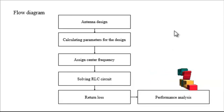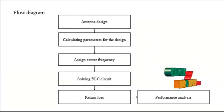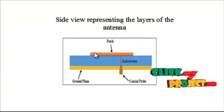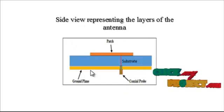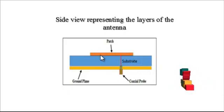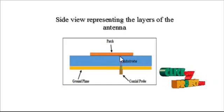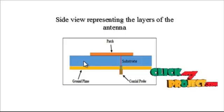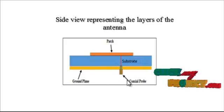For the antenna design, this is a side view representing the layers of the antenna. First is the patch, then the substrate, then the coaxial probe, and finally the ground plane. In the patch of the antenna we use the U-slot. The substrate material used is F4 with a dielectric constant of 4.4.